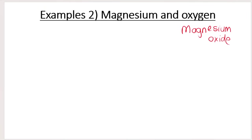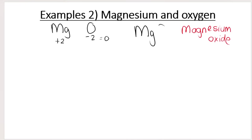In example number two, we're going to show Lewis dot diagrams for the formation of magnesium and oxygen — it's going to produce magnesium oxide, MgO. A nice first step, if they don't give you the chemical formula, is to figure it out: magnesium has a charge of plus two (it's in the second group), and oxygen has a charge of negative two, so they form an electrically neutral compound, giving us MgO — one magnesium and one oxygen.